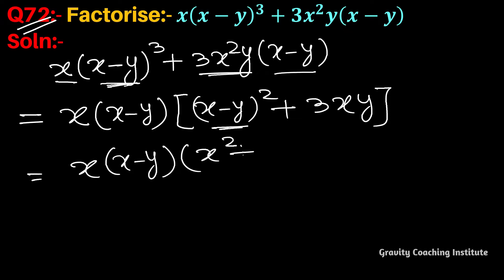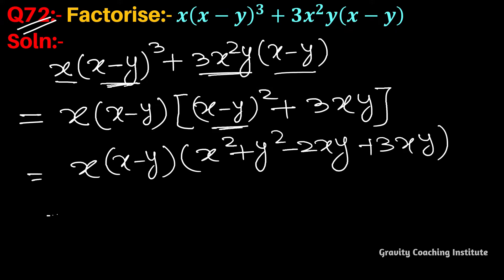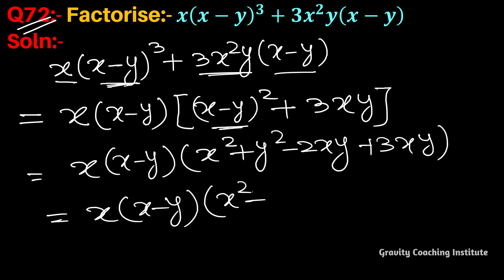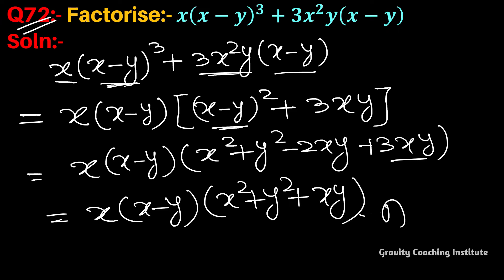Which is the required answer: x into (x minus y) into (x squared plus y squared minus 2xy plus 3xy), which simplifies to x(x minus y)(x² plus xy plus y²).